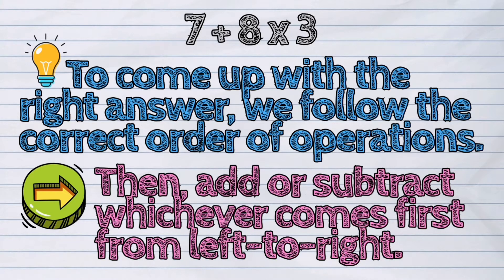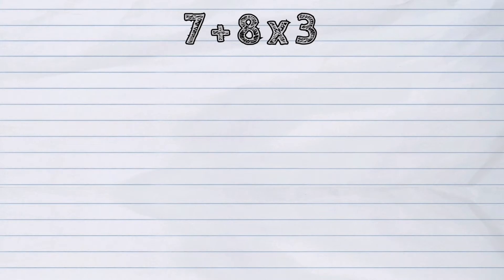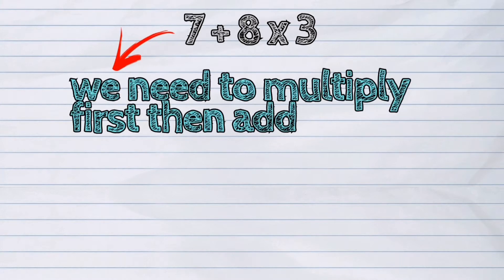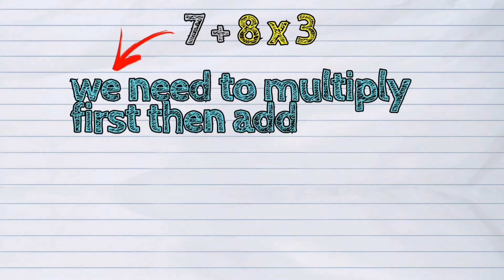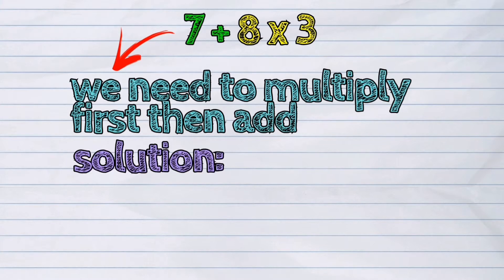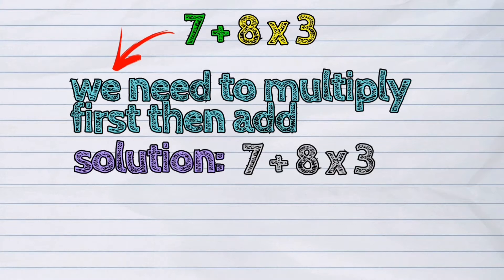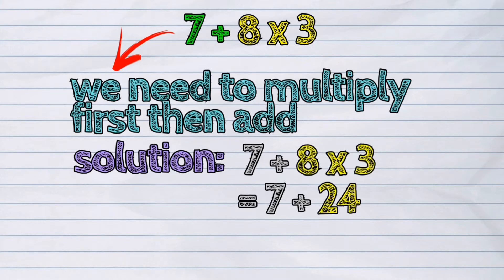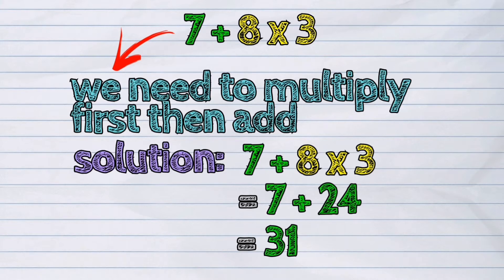Multiply or divide whichever comes first from left to right. Then add or subtract whichever comes first from left to right. In the expression 7 plus 8 times 3, we need to multiply first then add. So our solution should be 7 plus 8 times 3 is equal to 7 plus 24. 7 plus 24 is 31. 31 is our final answer.